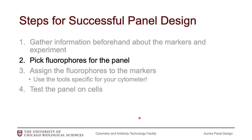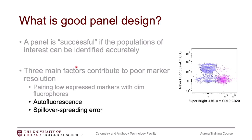Now that we have our markers, we need to pick fluorophores for our panel. To pick the fluorophores, this is where we need to have a better understanding of autofluorescence and spillover spreading error. I'm going to give you some background information on these two topics, and this will help us choose our fluorophores better and also help us be more successful at pairing our markers to our fluorophores.